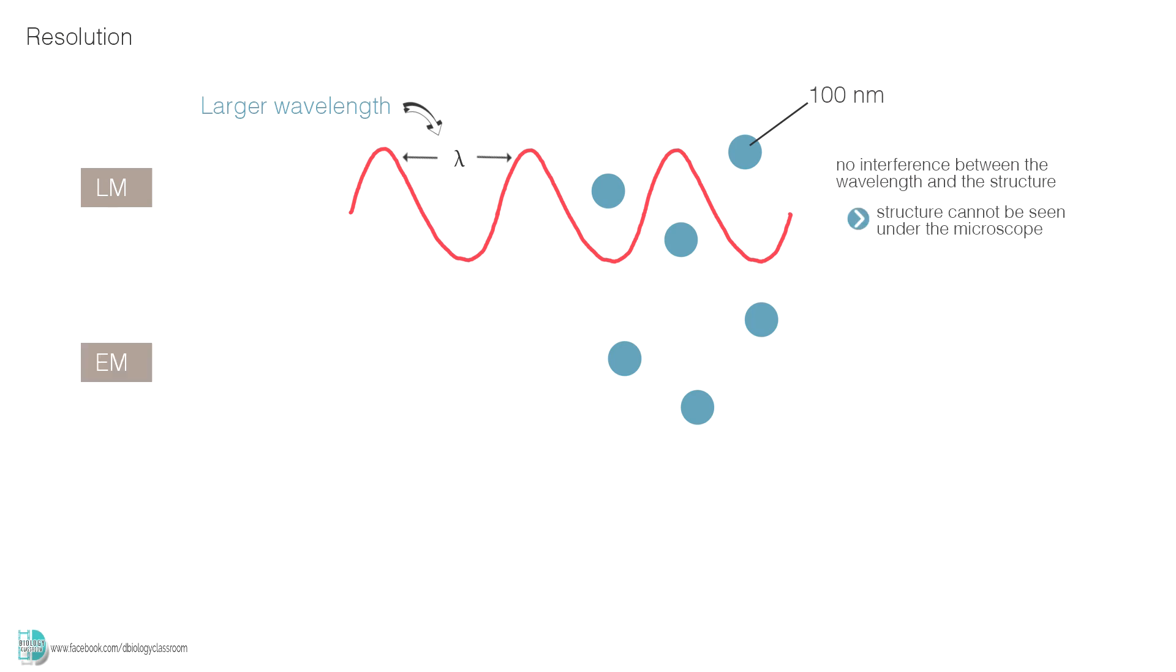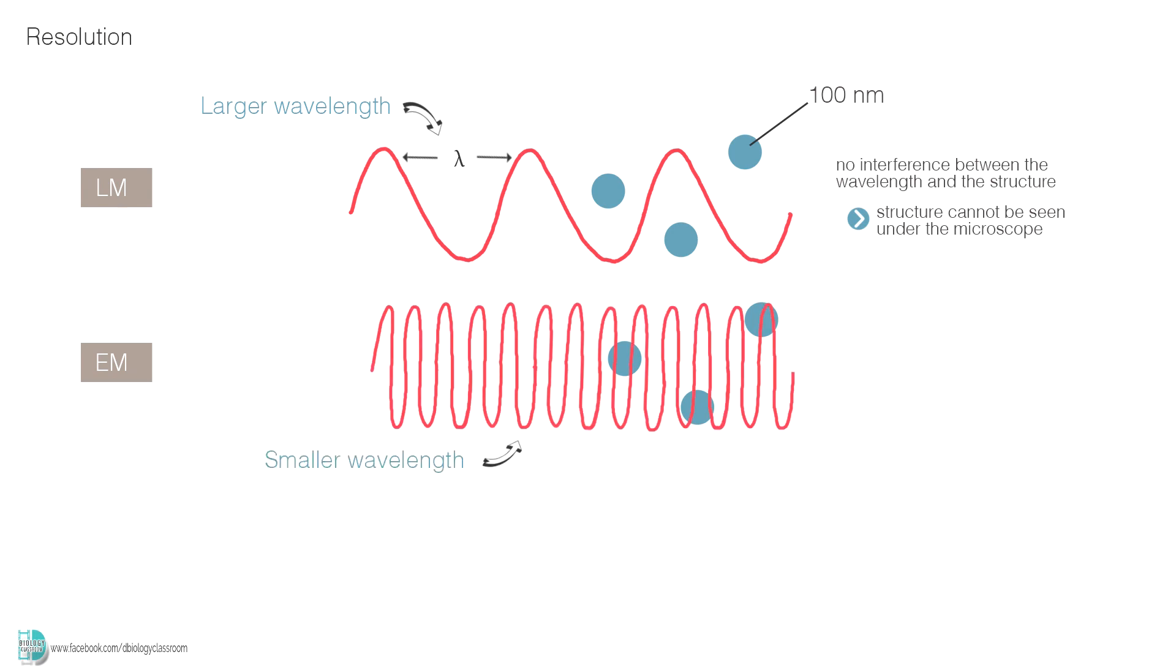But when you use an electron microscope to view it, due to the short wavelength of electron beam, the structures can interfere with the wavelength. So, it can be seen under the electron microscope.